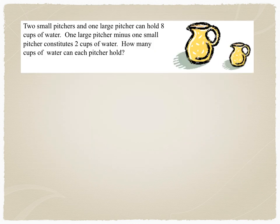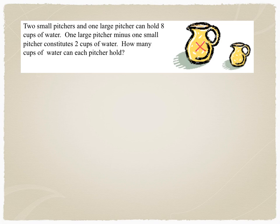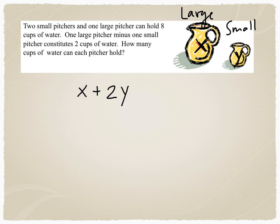Two small pitchers and one large pitcher can hold 8 cups of water. One large pitcher minus one small pitcher constitutes 2 cups of water. How many cups of water can each pitcher hold? Let's start with our variables. X is going to be the amount of water in a large pitcher. Y is the amount of water in a small pitcher. So two small pitchers, so 2Y, and one large pitcher, 1X, holds 8 cups of water. 1 large minus 1 small, so X minus Y, constitutes 2 cups of water. So now I have my two equations.